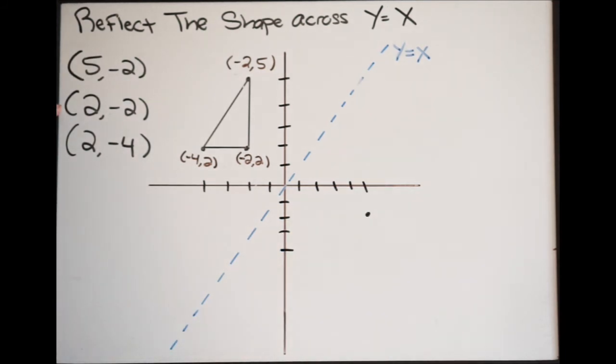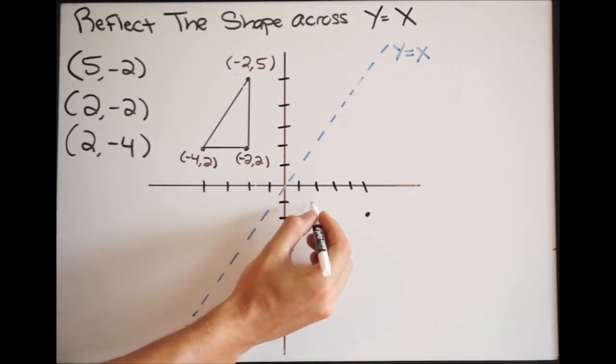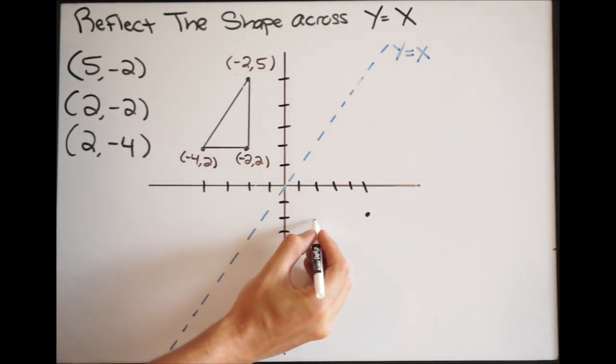Going on to our next point, we're going to go over 2 and then down negative 2. So to the right 2 and then down negative 2. That puts us right here.